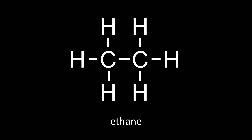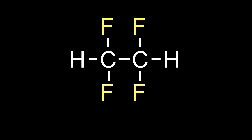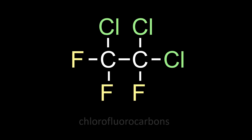Let's go back to ethane and see what else we can get with just two carbons. We can keep adding fluorines, each time creating a new molecule with new properties, or chlorine. And here we have a class of compounds called chlorofluorocarbons, which have a variety of uses including refrigerants and aerosols, but which are also the source of much pollution.